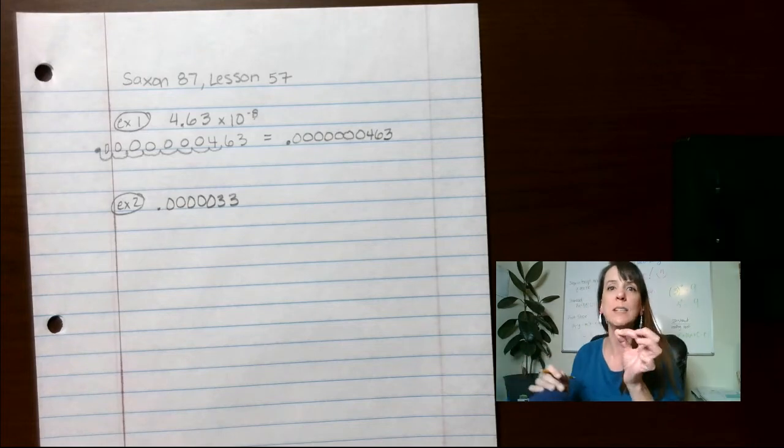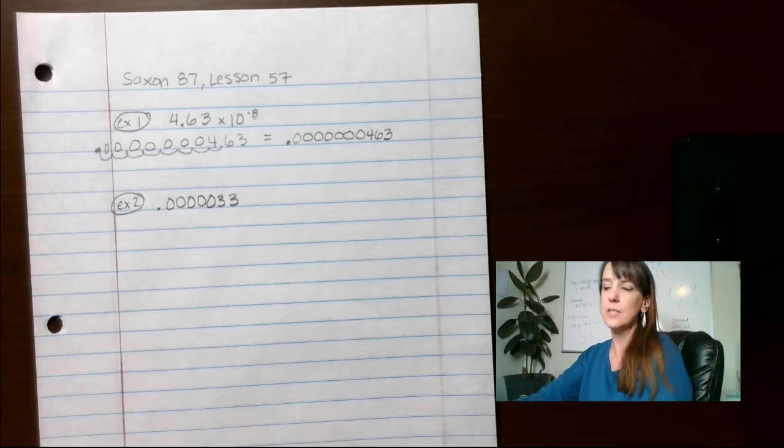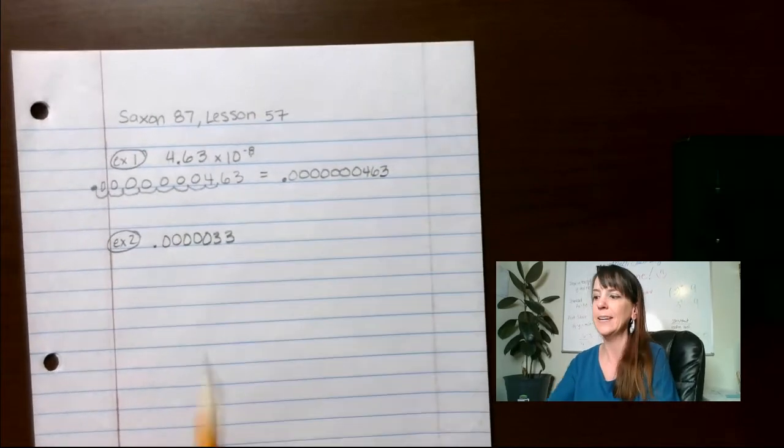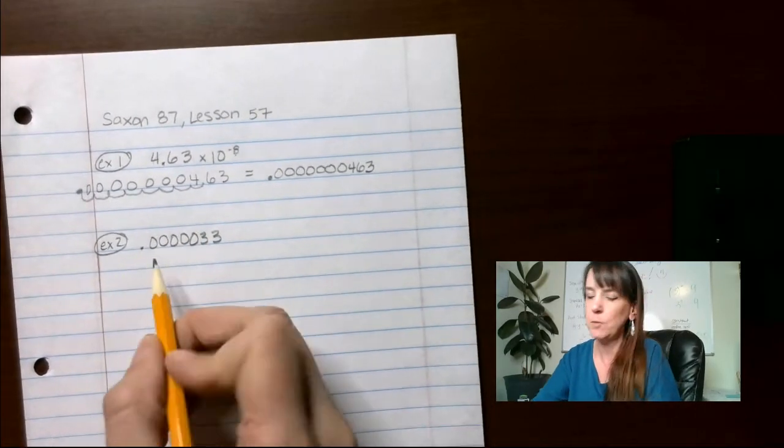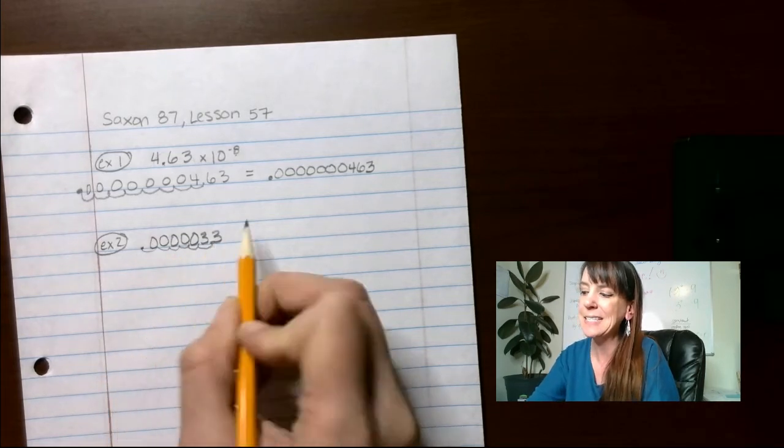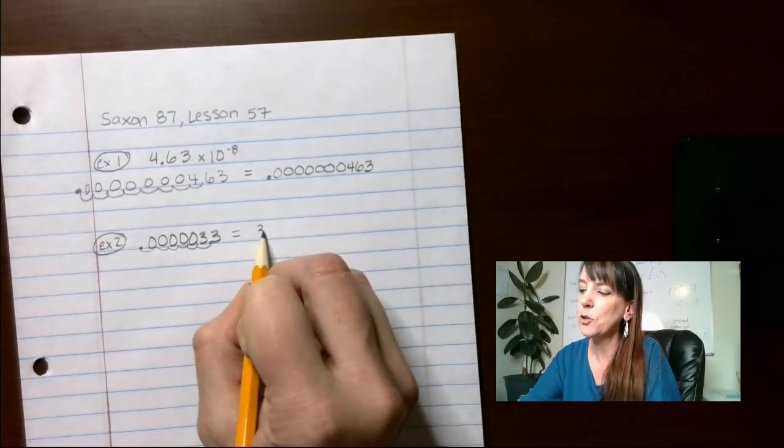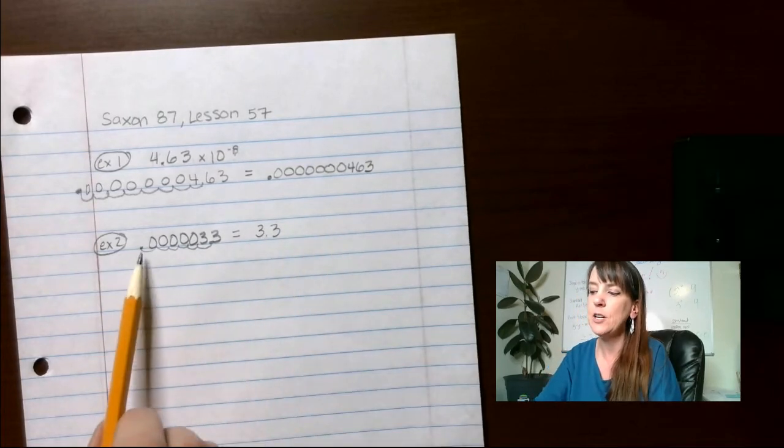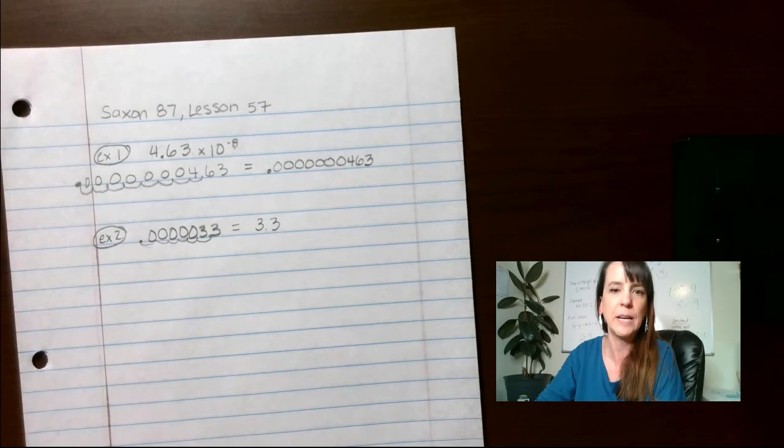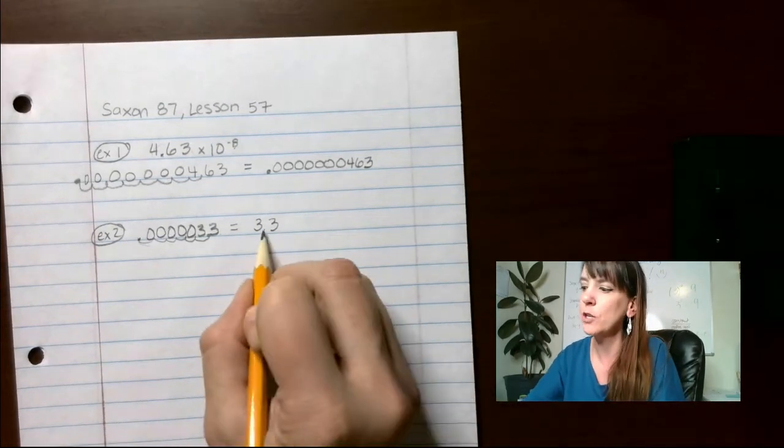Scientific notation. Remember, with scientific notation, we need our first number, this number right here, to be greater than 1, less than 10. So for me to move this decimal over, I would have to move it 1, 2, 3, 4, 5, 6. So that's 3.3. But notice how I made this number larger.